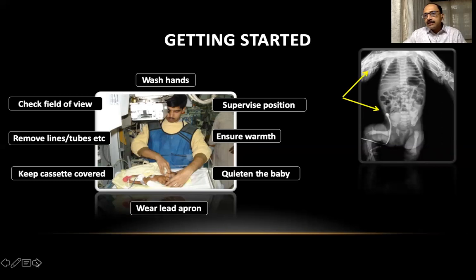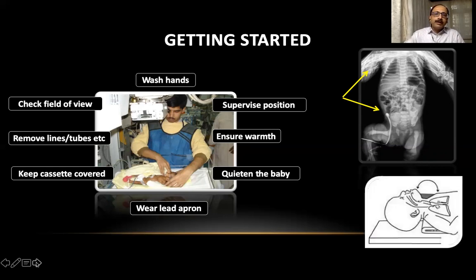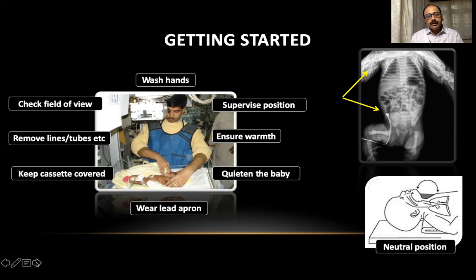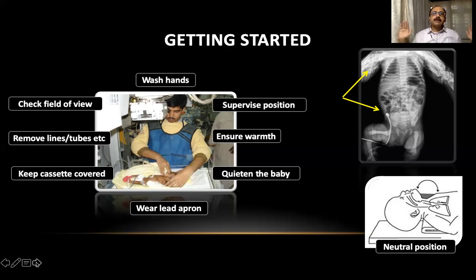What you also see is hands getting across the field of vision — again, that's not a good way to shoot an X-ray. Attention must be given to the position of the head; we want the baby in neutral position with the head in sniffing position. Flexion will push the endotracheal tube down; extension will pull the endotracheal tube up; and if you rotate the baby's head to one side, it will cause the endotracheal tube to move up. We need to ensure the baby's head remains in neutral position. Lifting both hands of the baby up may indirectly lift the chest, giving rise to lordosis on the X-ray. A better way would be to keep the hands in the sideways position.